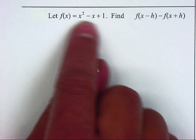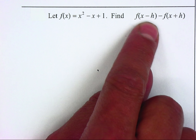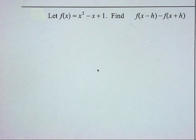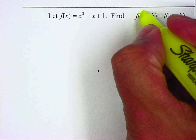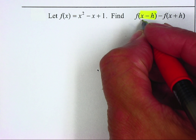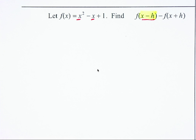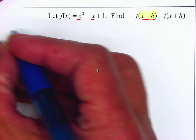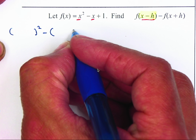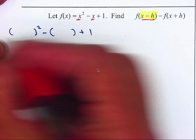Let f of x equal x squared minus x plus one. We're asked to find f of x minus h minus f of x plus h. First, we are going to find f of x minus h. It tells us we need to plug in x minus h instead of x. I'm going to set up: x squared — leaving space — minus x plus one, and replace x with x minus h.